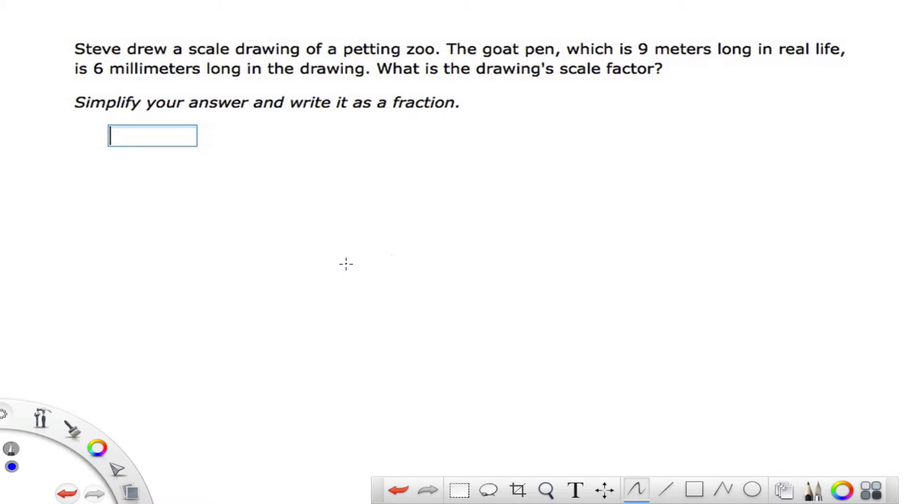Here's a third example of scale drawings and scale factors. This is asking, he's drawing a scale drawing of a petting zoo. And the goat pen, which is 9 meters long in real life, is 6 millimeters long in the drawing. What is the drawing's scale factor? So this is a little bit different. Scale factor. So this is where we're going to put the smaller one on top. In this case, 6 millimeters on top, and 9 meters on the bottom.